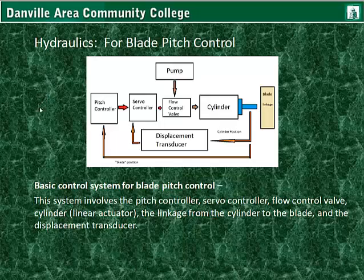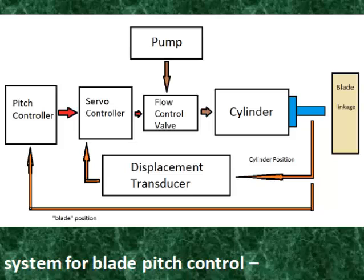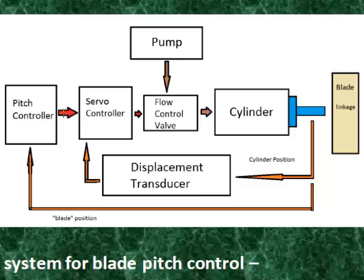Getting into the hydraulic blade pitch control. Here's a basic control system for blade pitch control. This system involves the pitch controller, the servo controller, the flow control valve, the cylinder acting as a linear actuator, the linkage from the cylinder to the blade, the displacement transducer, and the pump that generates the hydraulic pressure. Hydraulic fluid is indicated by brown arrows, position signals in orange, and command signals by red arrows.